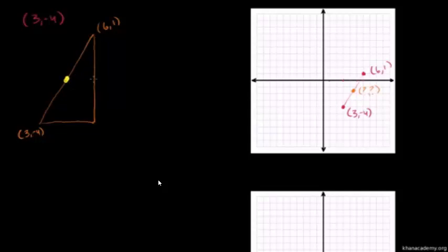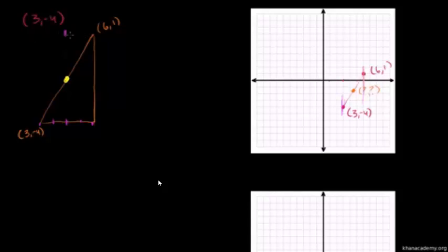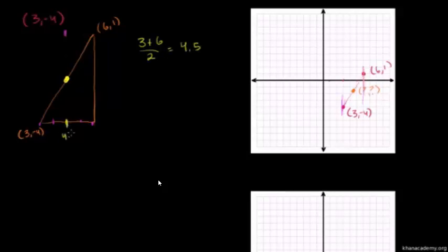What's this guy's x coordinate going to be? This line out here represents x is equal to 6, and this over here represents x is equal to 3. He's going to be smack dab in between — this distance is going to be equal to that distance. His x coordinate is going to be right in between 3 and 6. So what do we call the number that's right in between 3 and 6? We could call it the midpoint, or the mean, or the average. We just figure out 3 plus 6 over 2, which equals 4.5. So this x coordinate is going to be 4.5.